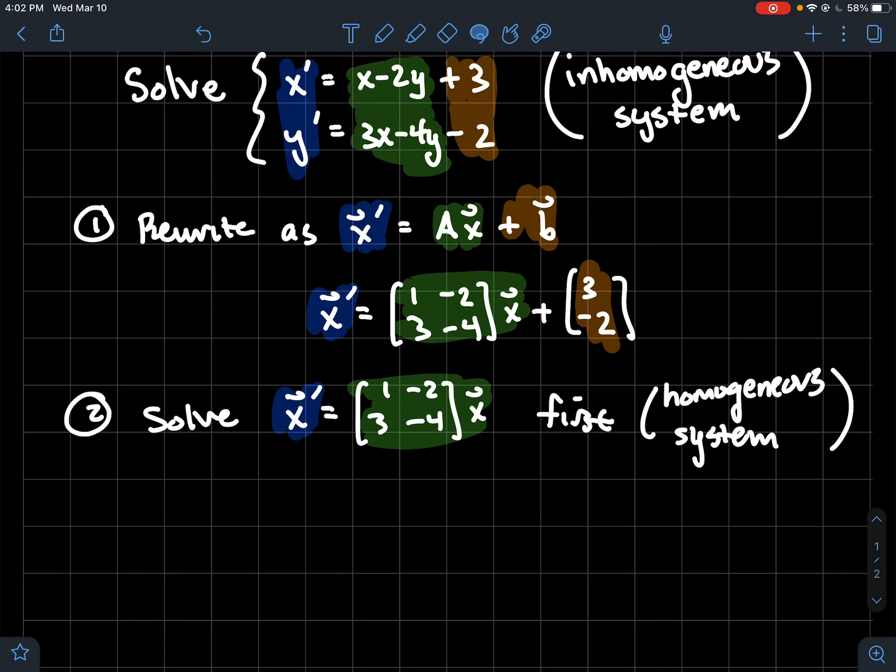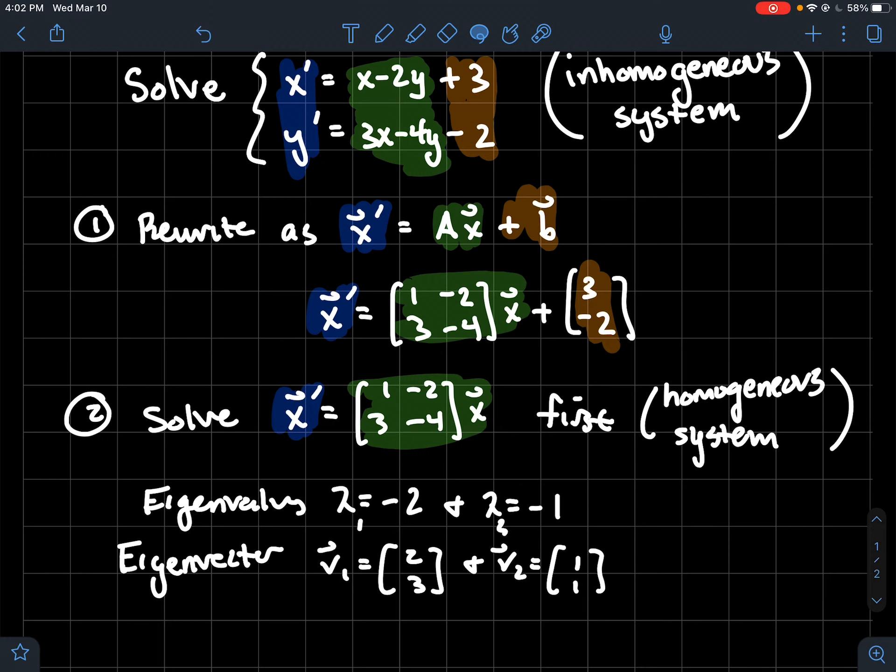Find the eigenvalues of the matrix, and you should get the eigenvalues lambda one is negative two and lambda two is negative one. Find the eigenvectors that correspond to those eigenvalues. Some good ones: for negative two I'll use two three, and for negative one I'll use the vector one one.